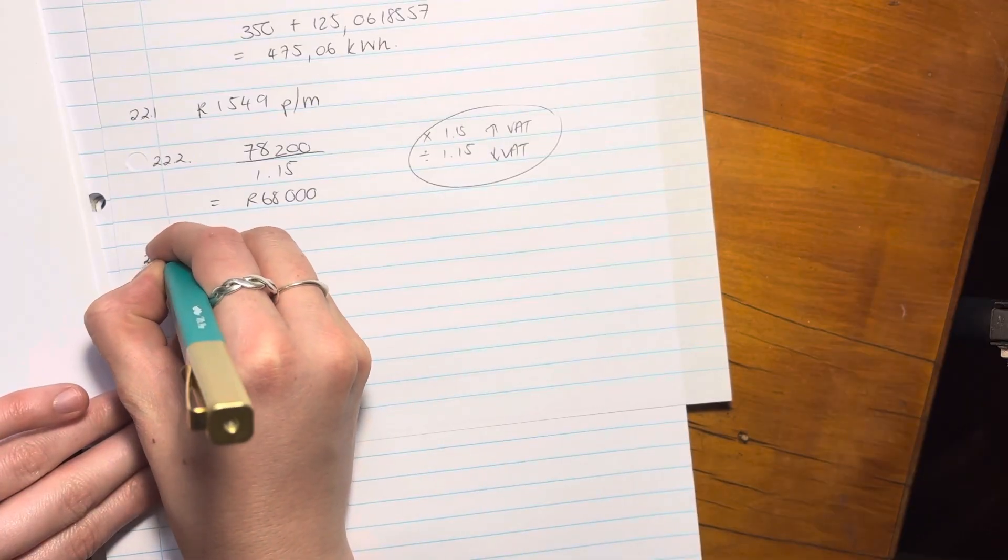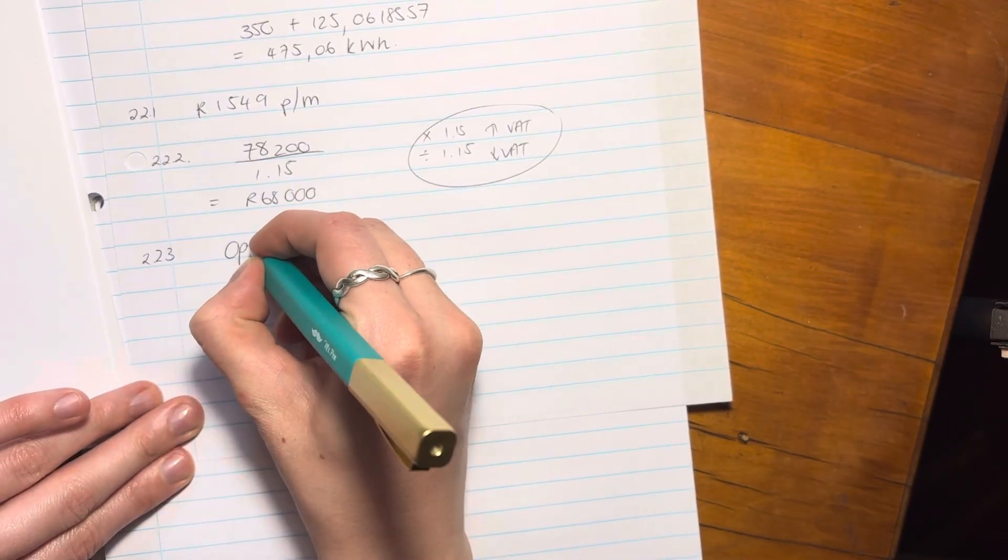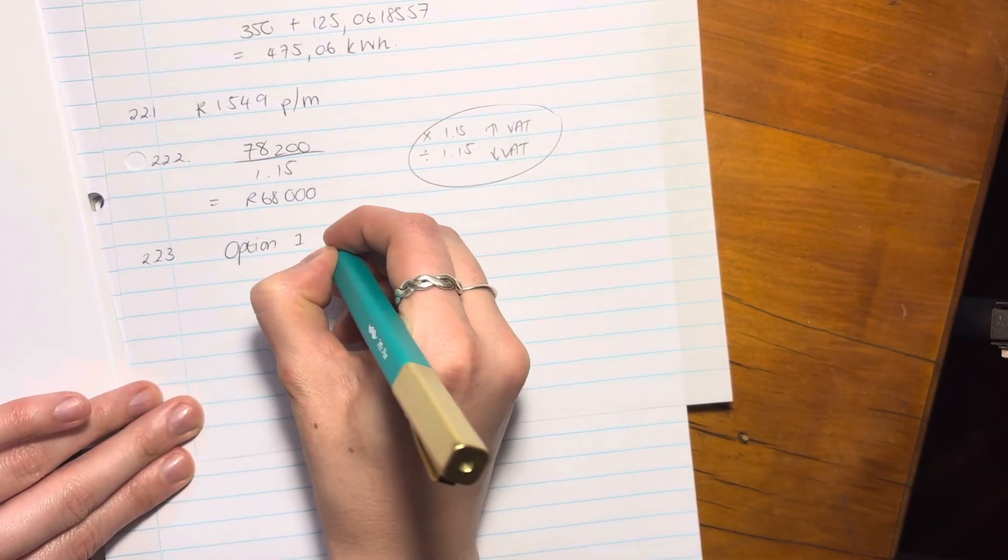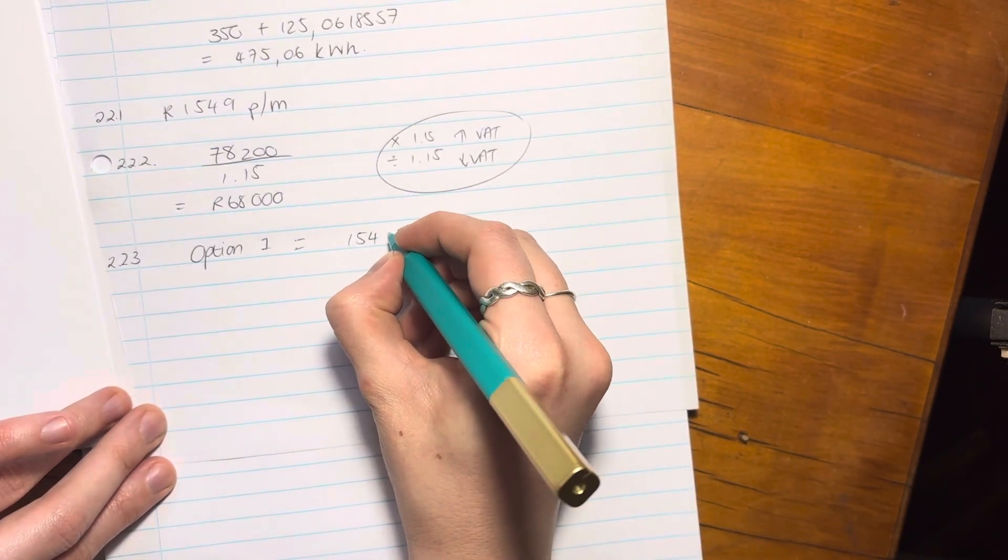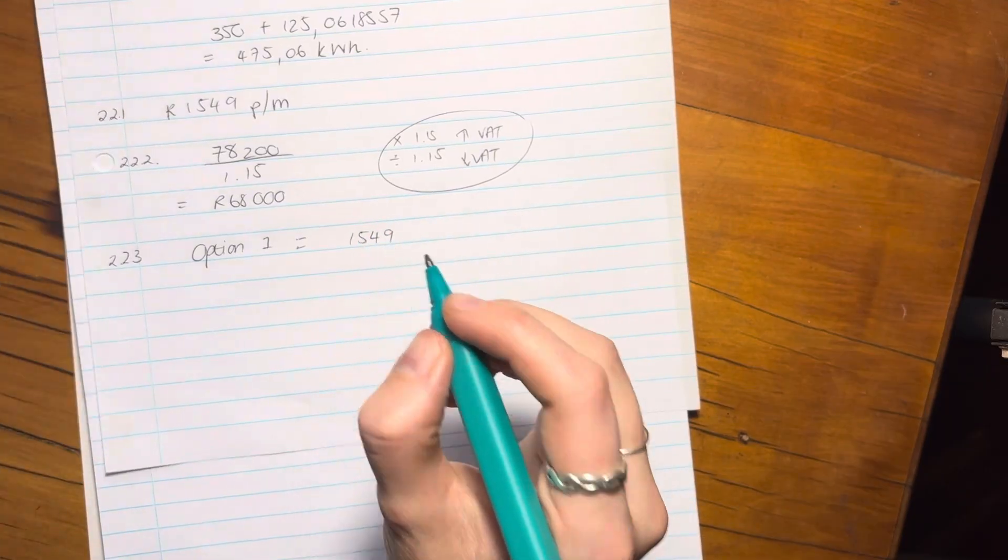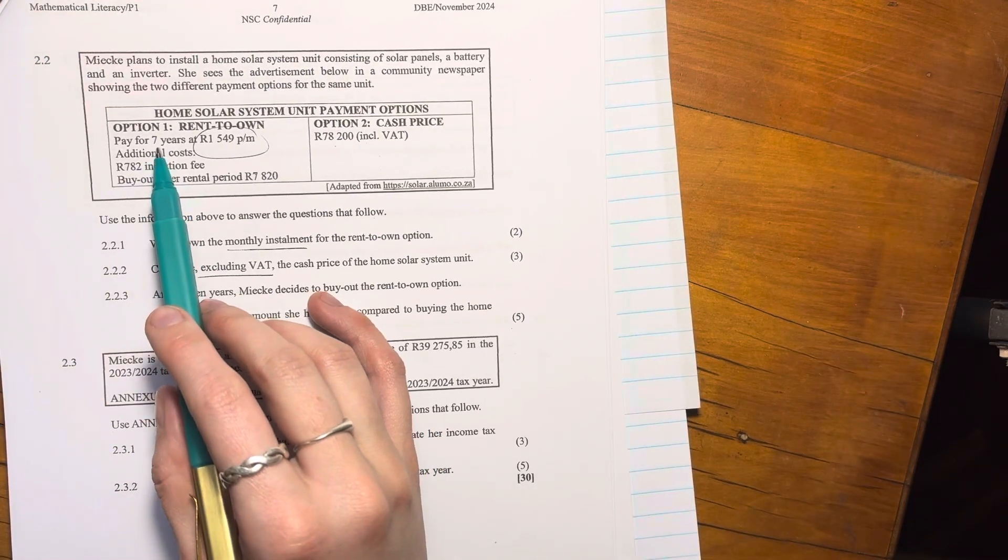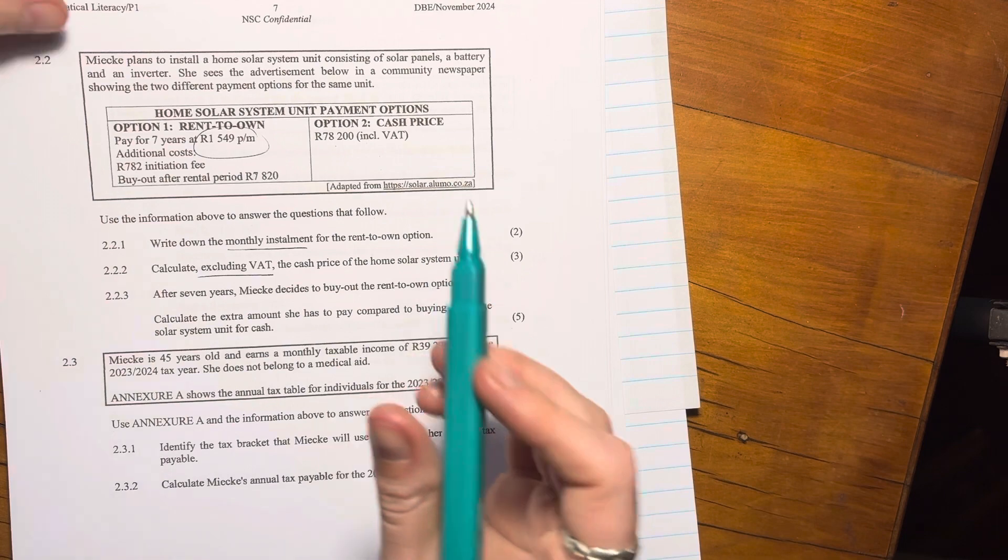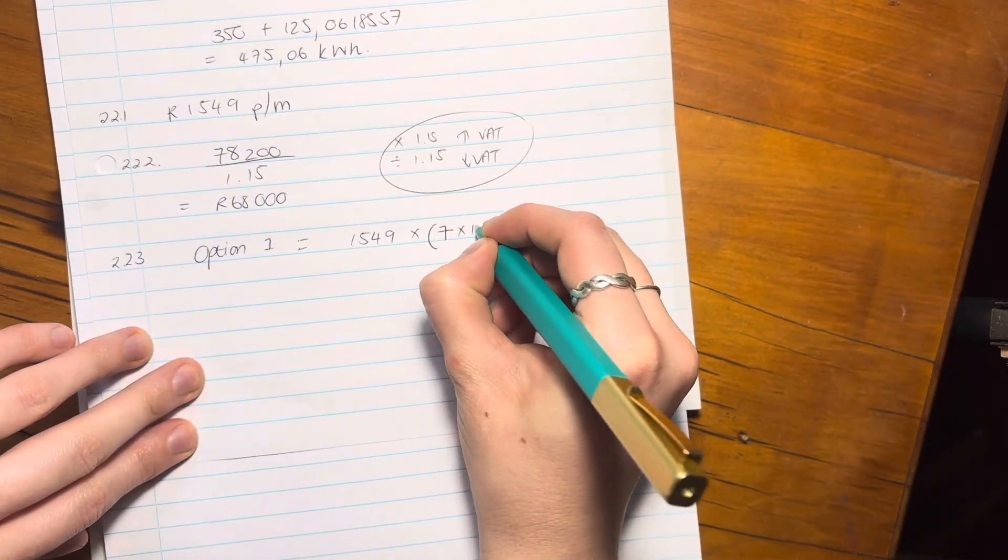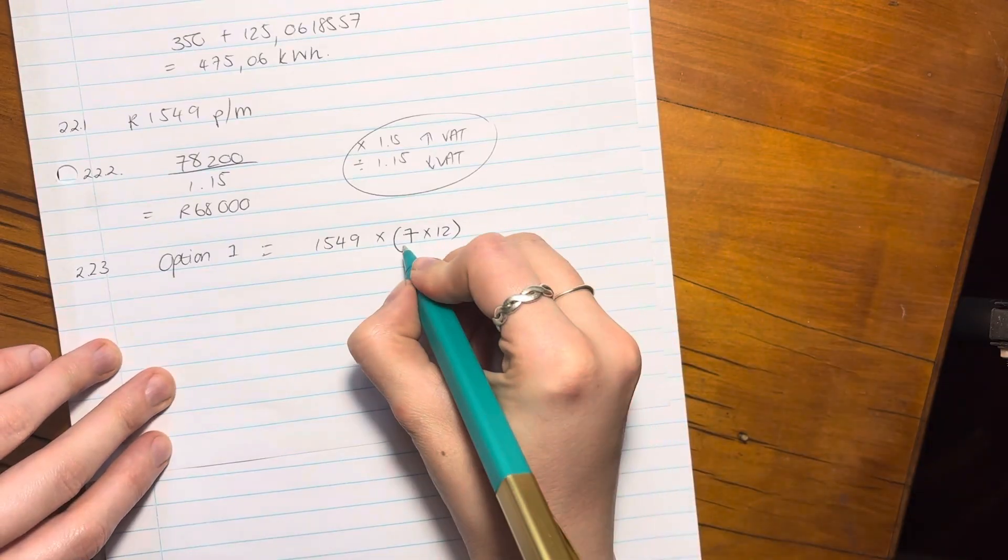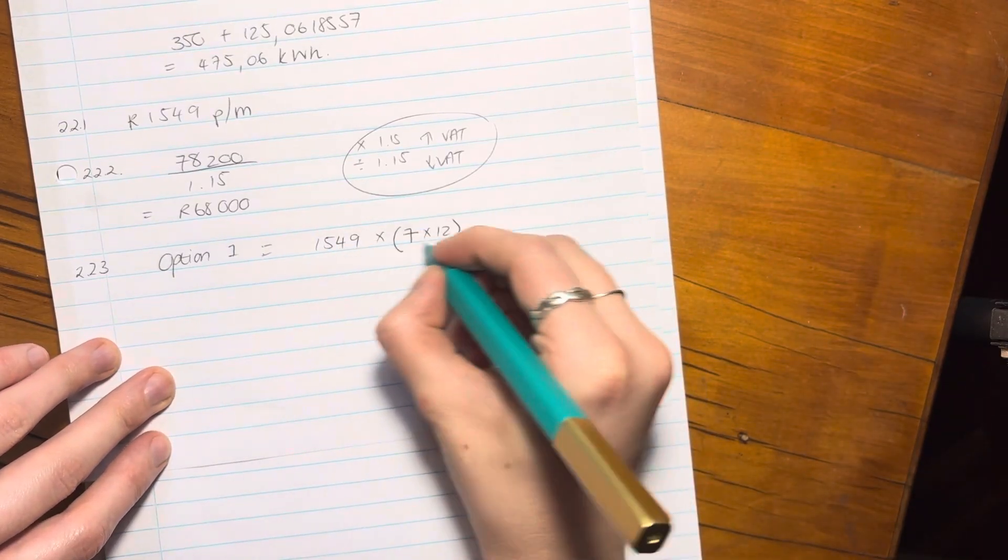2.2.3. Option uno. It's going to be R1549. Now, that is for seven years, but that's every month. So we're going to say times seven, but we have to then times that seven by 12, right? Because that's the total number of months. So that's the monthly rate.